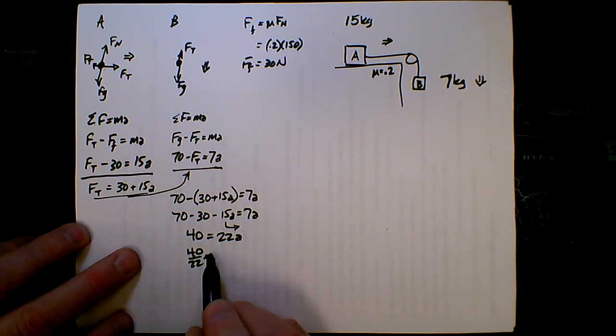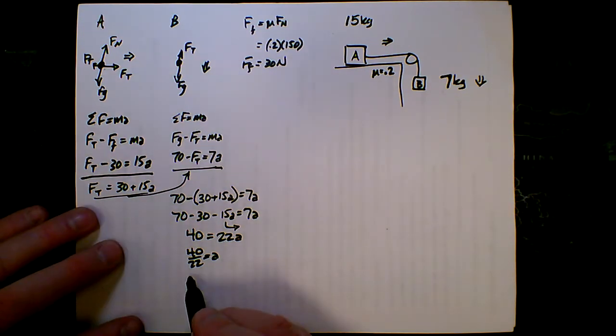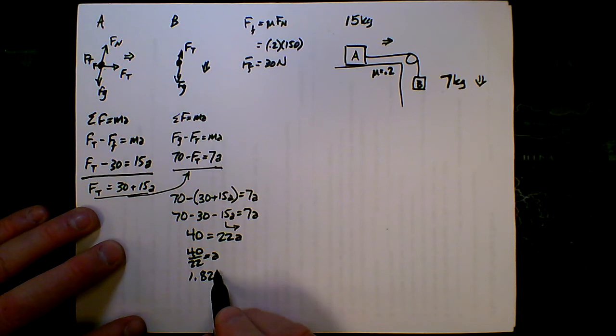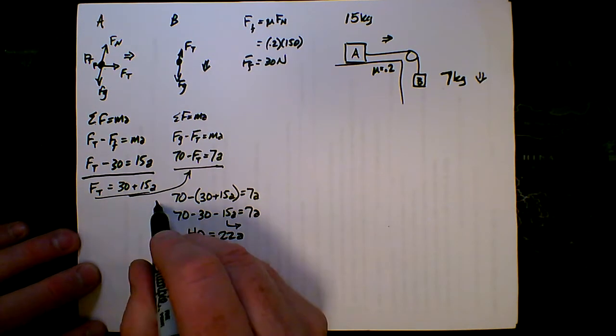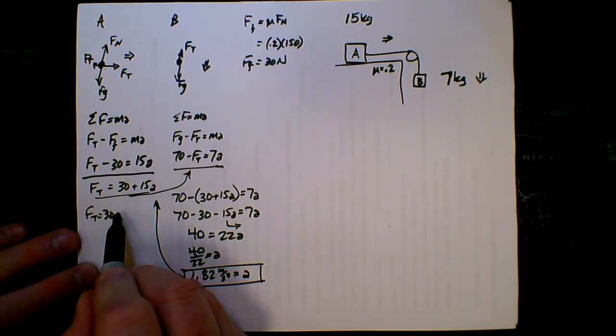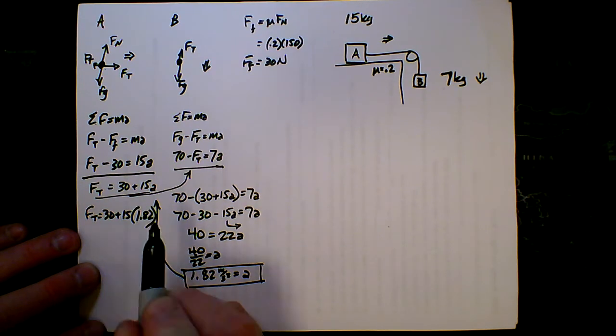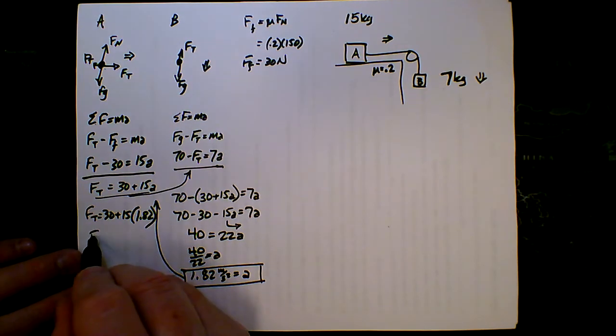So 40 divided by 22 is my acceleration. So I'll push a few buttons on my calculator. 40 divided by 22, get 1.82 meters per second squared. That is the acceleration. To find the tension then, I just plug that back in up here. I know the tension is equal to 30 plus 15 times 1.82. So 30 plus 15 times 1.82, and I get for the tension 57.3 Newtons.